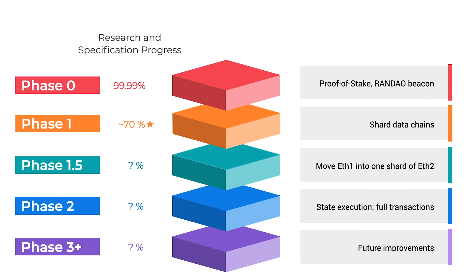Phase 1 is the middle phase between Phase 0 and Phase 2. It's an important middle link that allows us to separate the data layer and the state execution layer. This kind of abstraction allows different research topics to be pursued in parallel. Phase 1 will also pave the way so that we can merge each Phase 1 into the Phase 2 world before Phase 2 is done.